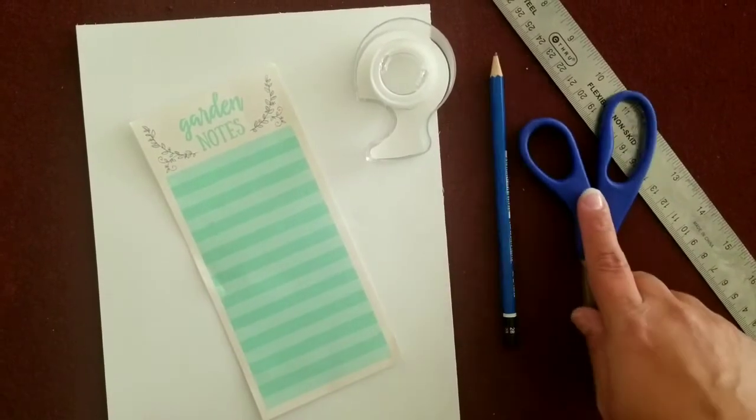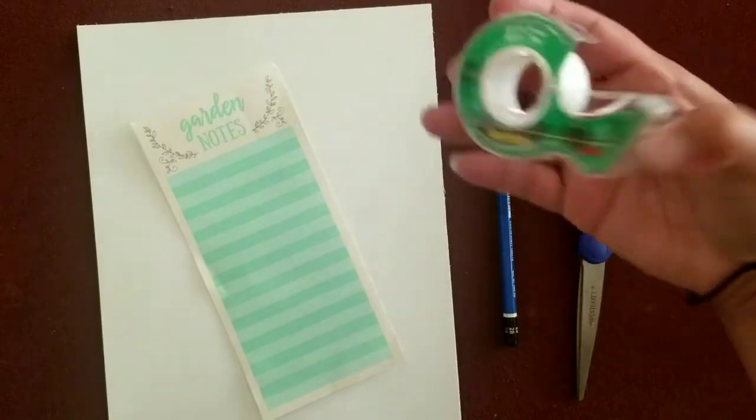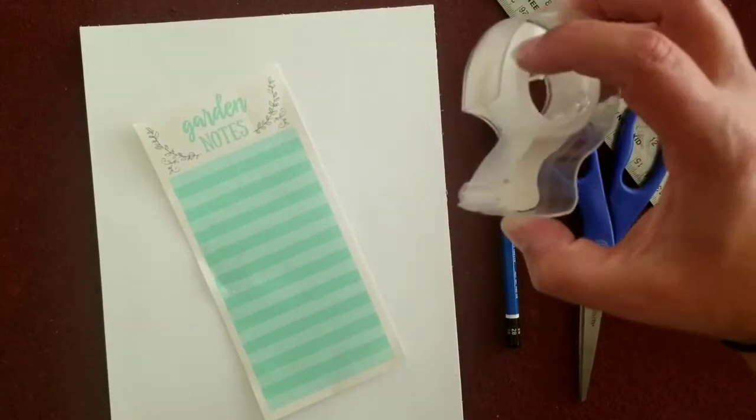So you definitely need a pair of scissors, a pencil, a ruler, and some tape—just some regular scotch tape is fine, maybe some masking tape.